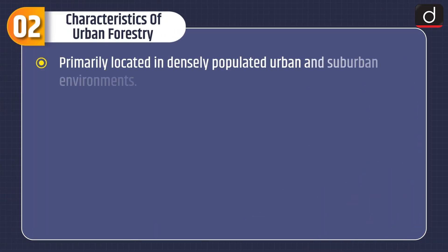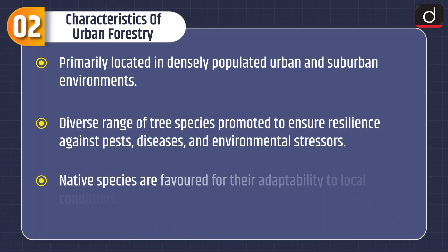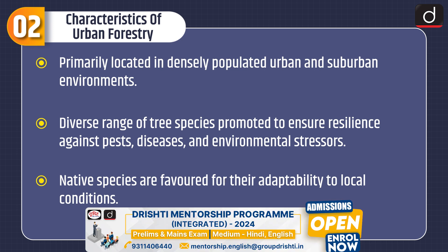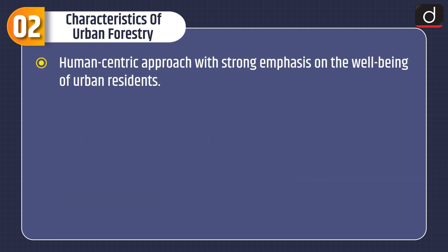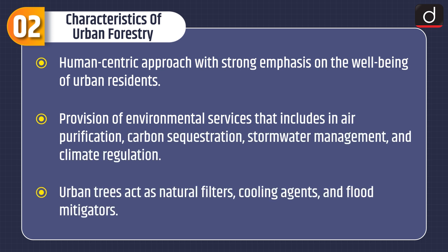Characteristics of urban forestry: urban forestry is primarily located in densely populated urban and suburban environments. A diverse range of tree species is promoted to ensure resilience against pests, diseases, and environmental stressors. Native species are favored for their adaptability to local conditions. There is a human-centric approach with a strong emphasis on the well-being of urban residents, including provision of environmental services such as air purification, carbon sequestration, storm water management, and climate regulation.